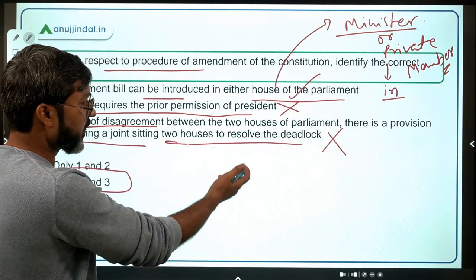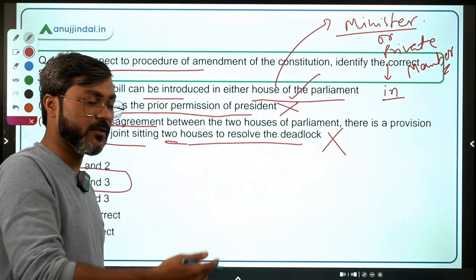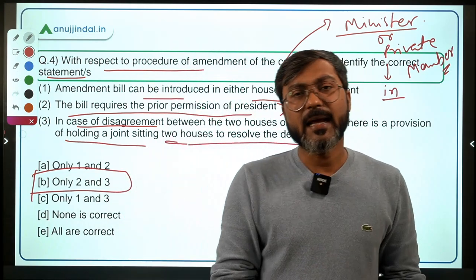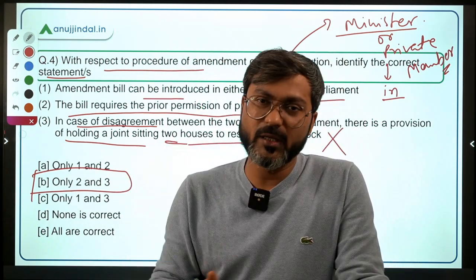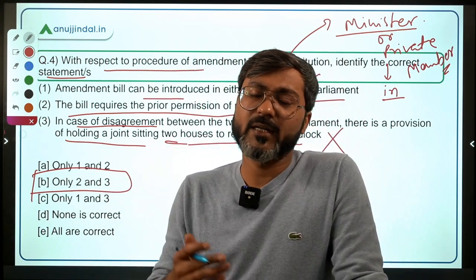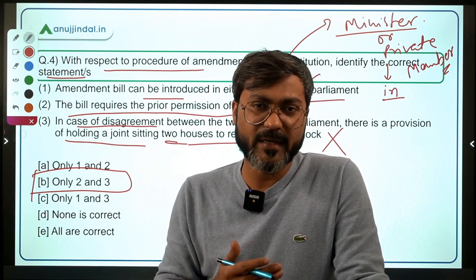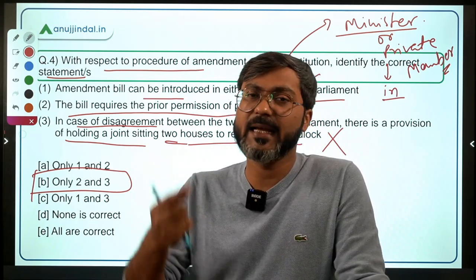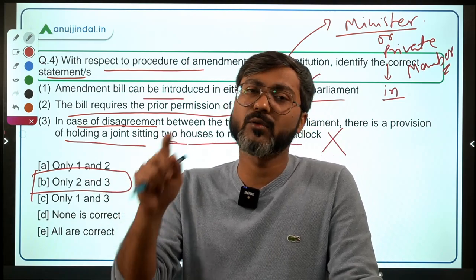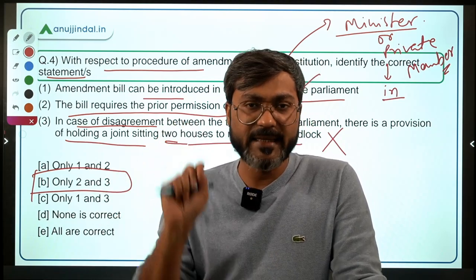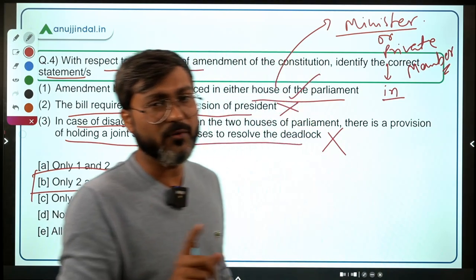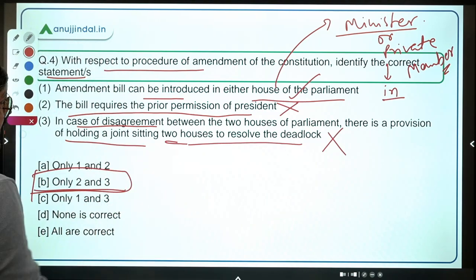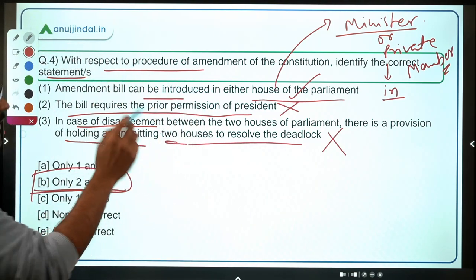After the bill is passed in parliament, it goes to the president for assent, and the president has to give assent — they cannot withhold it, cannot send it back, cannot do anything else. In the case of a constitutional amendment bill, assent is mandatory. So if the question asks to identify incorrect statements, the answer is only statements two and three.